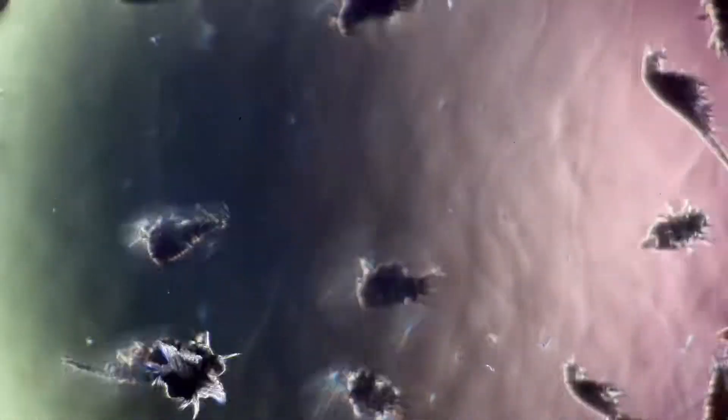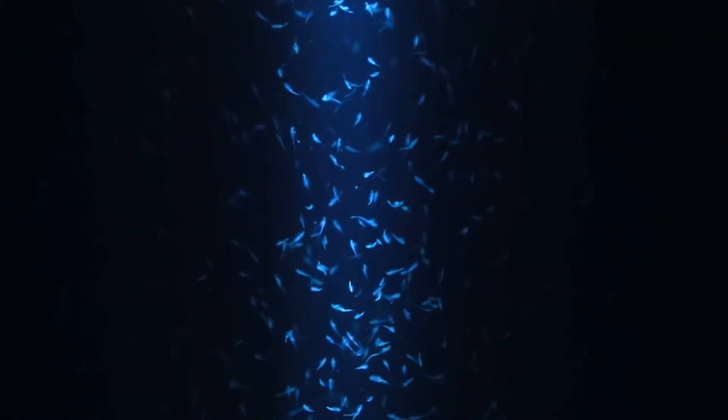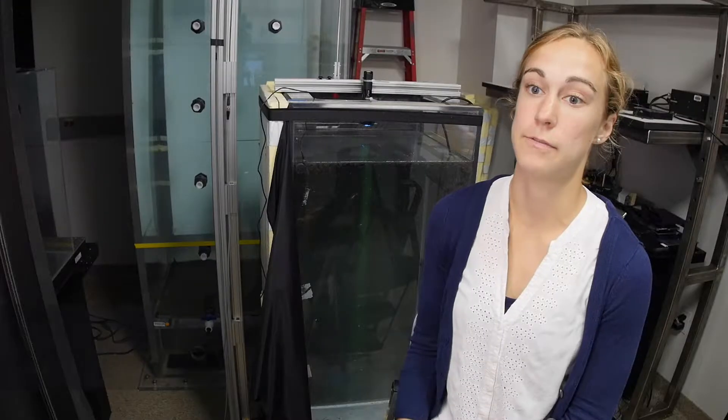In this saltwater tank at Stanford University, these brine shrimp are undergoing what is called a vertical migration. So we have a tank of brine shrimp. They are representative of marine zooplanktons such as krill in terms of their size and their swimming mode.